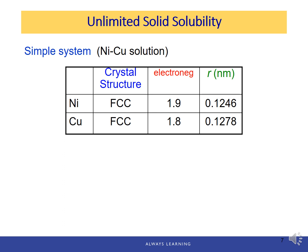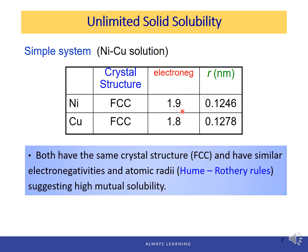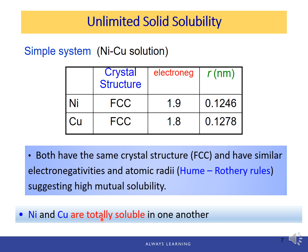One of the simplest alloy systems with unlimited solid solubility is the nickel-copper system. Both nickel and copper have FCC crystal structure, very similar electronegativities (1.9 vs. 1.8), and very close atomic sizes. Based on the Hume-Rothery rules, they have high mutual solubility, and experiments confirm they are totally soluble in one another — resulting in the isomorphous phase diagram.